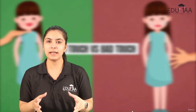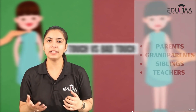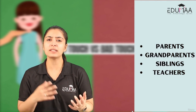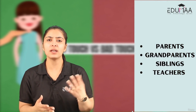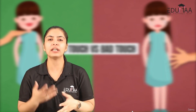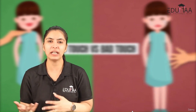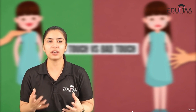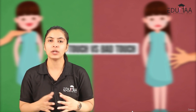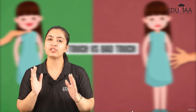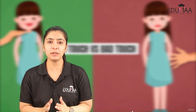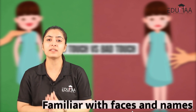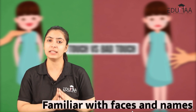The safe circle can include grandparents, teachers, siblings, or any neighbor if your child feels comfortable and can trust them. Your child must also be familiar with these faces and names.